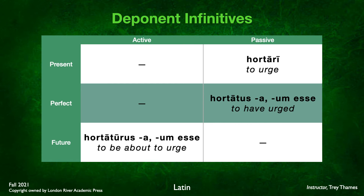Now let's look at the infinitive chart. We would normally expect six infinitives, but there are only three. The future active breaks the rule: hortaturus -a -um esse, with active form and active meaning — to be about to urge. For the passive present and passive perfect, these hold true to the deponent rule — passive forms with active meanings: hortari meaning to urge, and hortatus -a -um esse meaning to have urged.